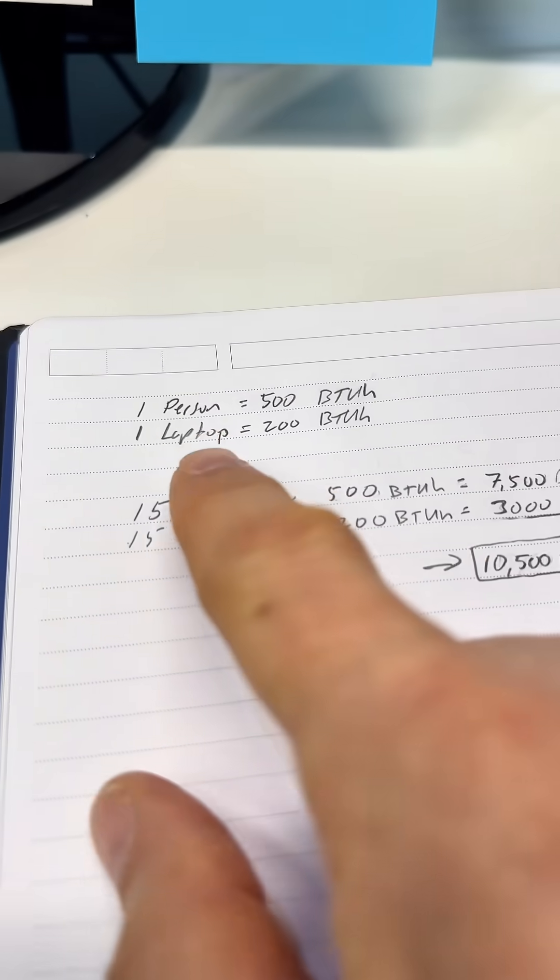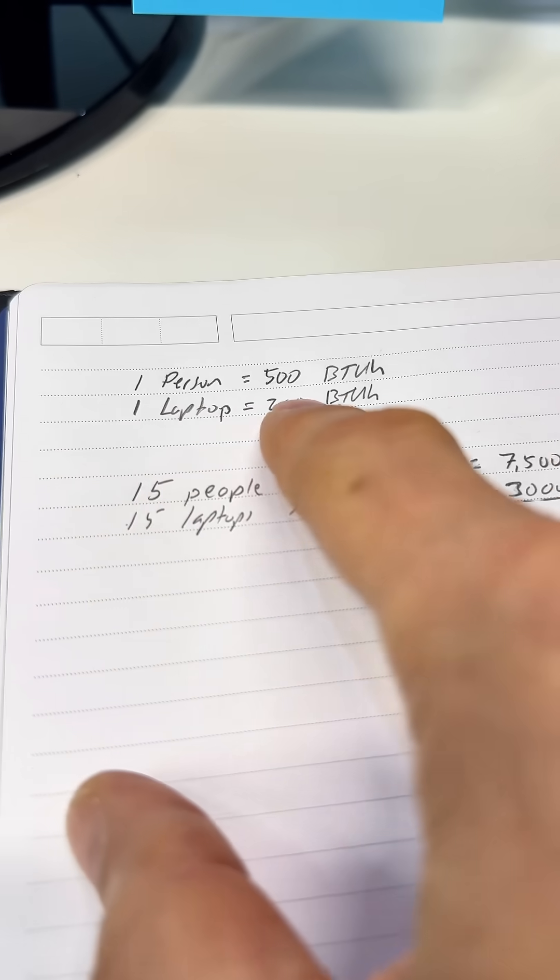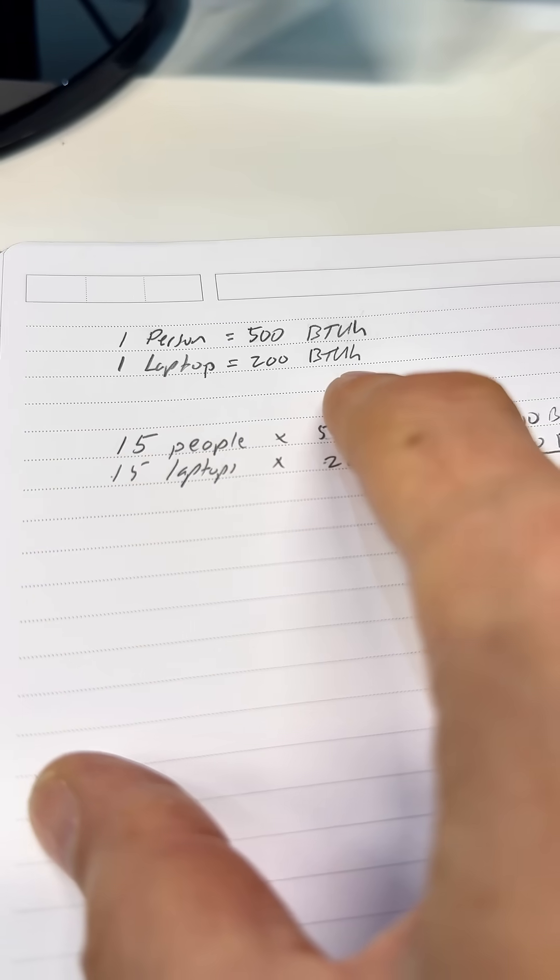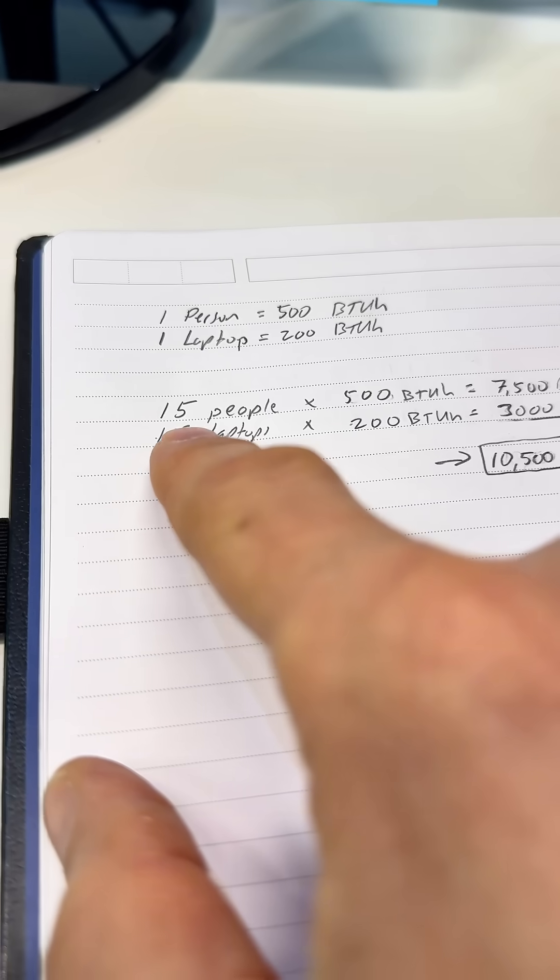So here's what I came up with. One person, 500 BTUs per hour. Each laptop is 200 BTUs per hour. And I'm including that in the calculation. Maybe I shouldn't.